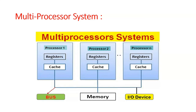A multi-processor system contains more than one processor. Here there are three processors shown — processor one, processor two, and so on up to N processors. Each has its own cache and is connected with the bus, memory, and I/O devices.